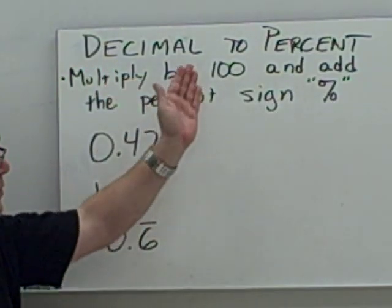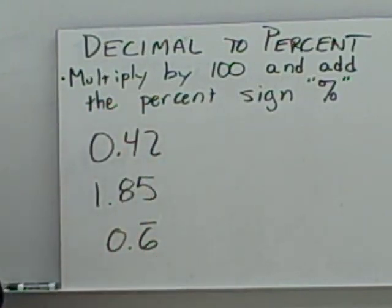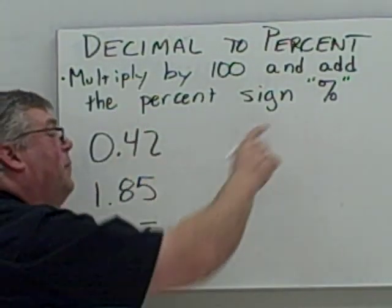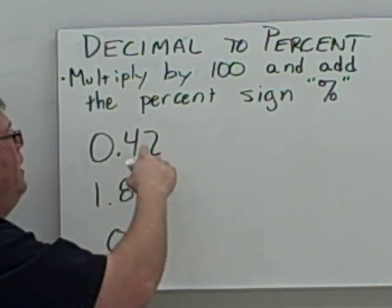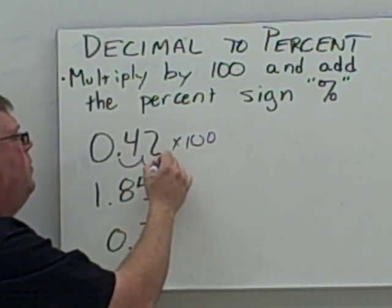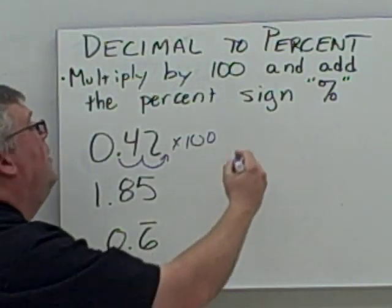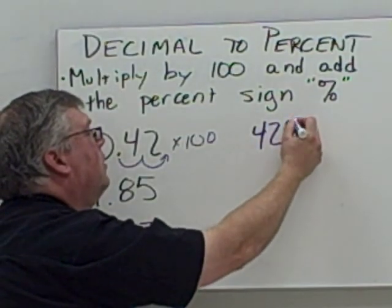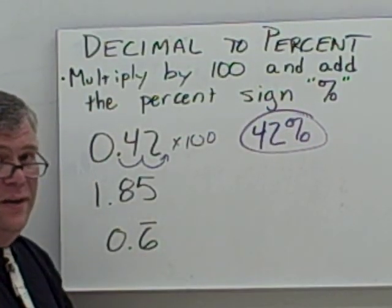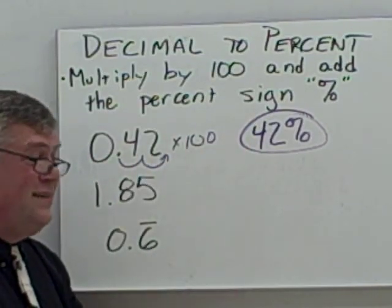Now we're going to go from decimal to percent — backwards. When you go from a decimal to a percent, instead of dividing by 100, you're going to multiply by 100, then add the percent sign. So here, multiplying by 100 means moving the decimal point two places to the right. This becomes 42%. Don't forget to put the percent sign on it — if it doesn't have the percent sign, it's not a percent.